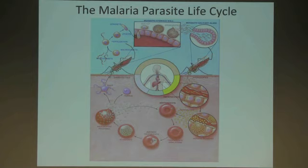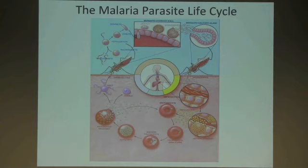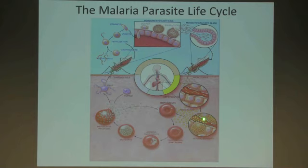The malaria parasite is a sneaky parasite. You get the disease when you're bitten by the female Anopheles mosquito. From her salivary glands, she injects the parasite — called a sporozoite — into your bloodstream. Those sporozoites target your liver, bury into it, and for about two weeks they multiply and change their shape. Then they burst out of your liver and infect your red blood cells.